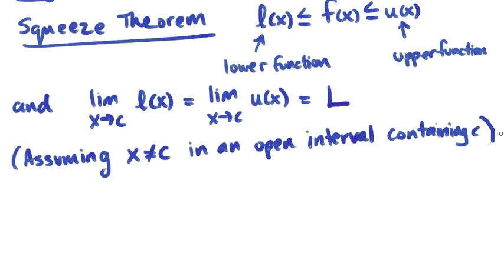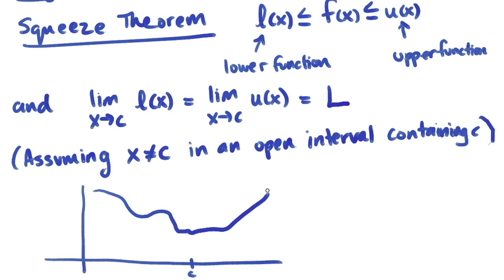Alright, so a sketch of this. Here's our point c. We've got an upper function, some function that cruises along like this, called u of x. At the point c,